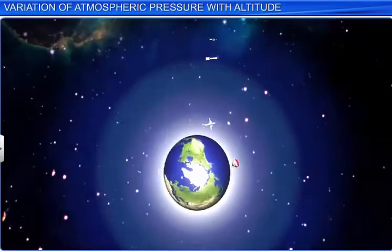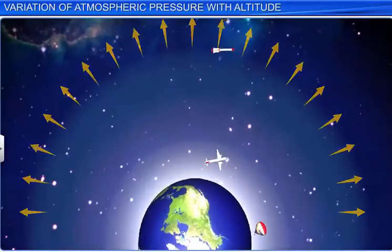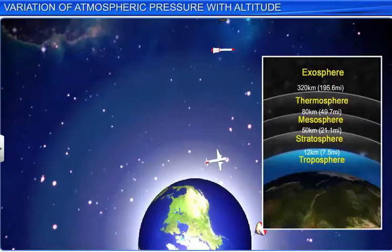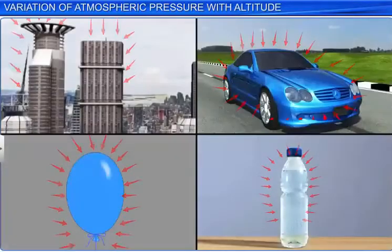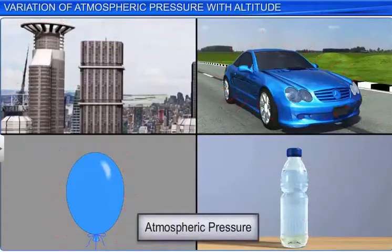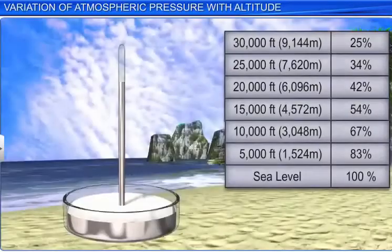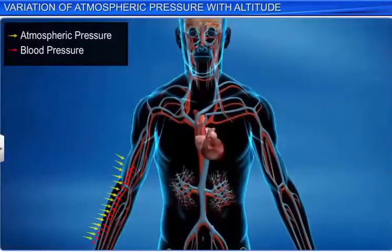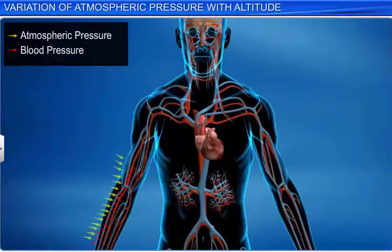The air that extends above the Earth's surface in different layers is called the atmosphere. The pressure exerted by the atmosphere is called atmospheric pressure. Air exerts pressure as it has weight. Air pressure is the highest at sea level. Although air exerts pressure on our body from all sides, we are not aware of it because the blood in our body exerts an equal and opposite pressure from the inside.